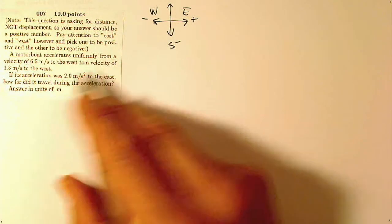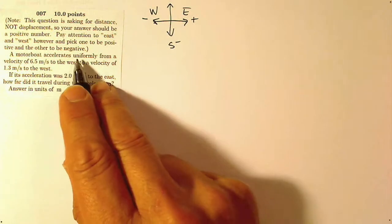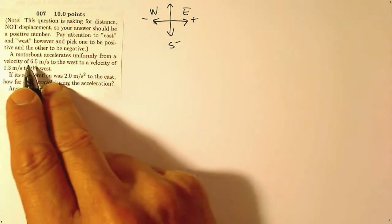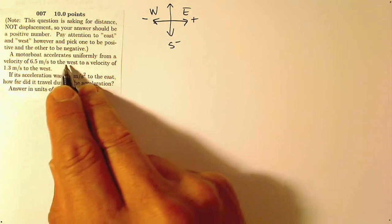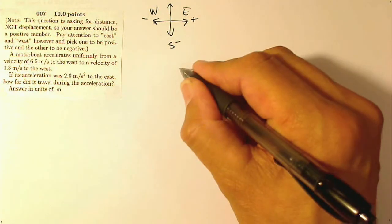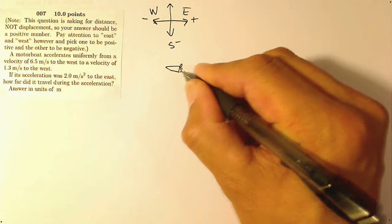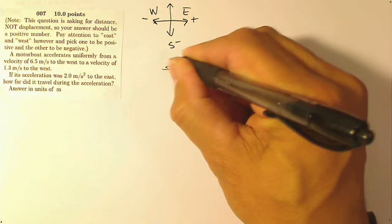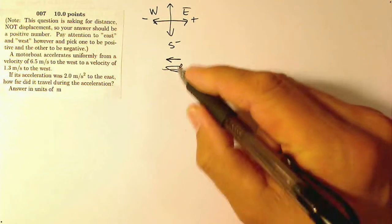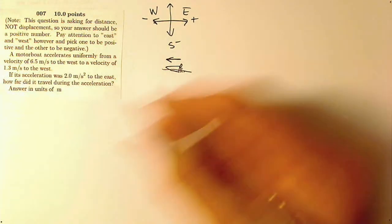So now let's get to the question. A motorboat accelerates uniformly from a velocity of 6.5 meters per second to the west. So here is my motorboat, and it's moving along at a speed. Here's my motorboat, a little engine there. Okay, so my motorboat is moving this direction, and it's moving this direction at 6.5 meters per second.